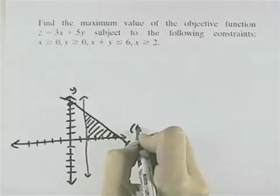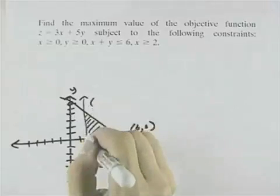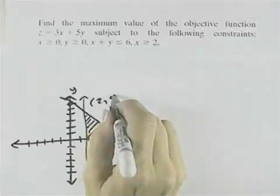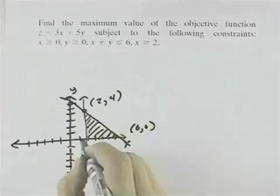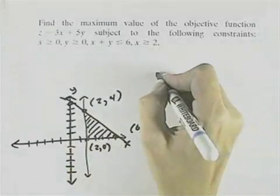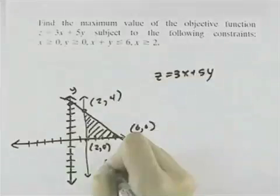And so we have one point when x is 6 and y is 0. We also have a point where x is 2, and if x is 2, y is 4, where they intersect here. And down here we have x is 2, y is 0. So looking at our objective function, z equals 3x plus 5y, we can test it for each of these three points.